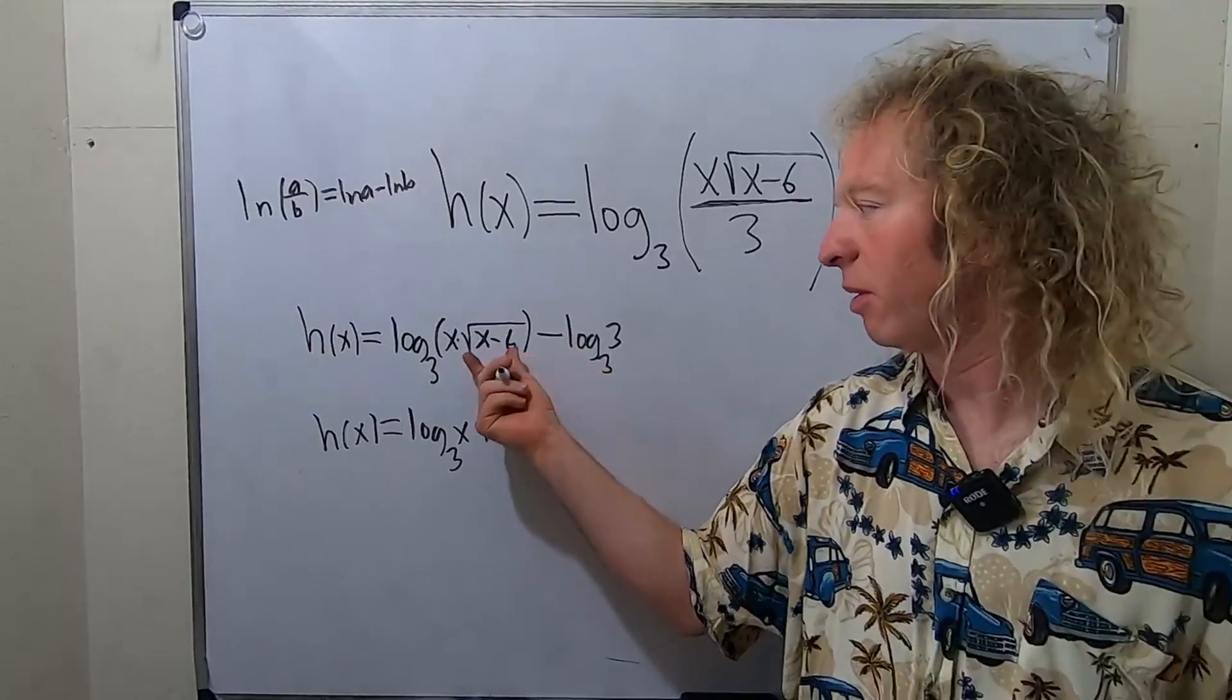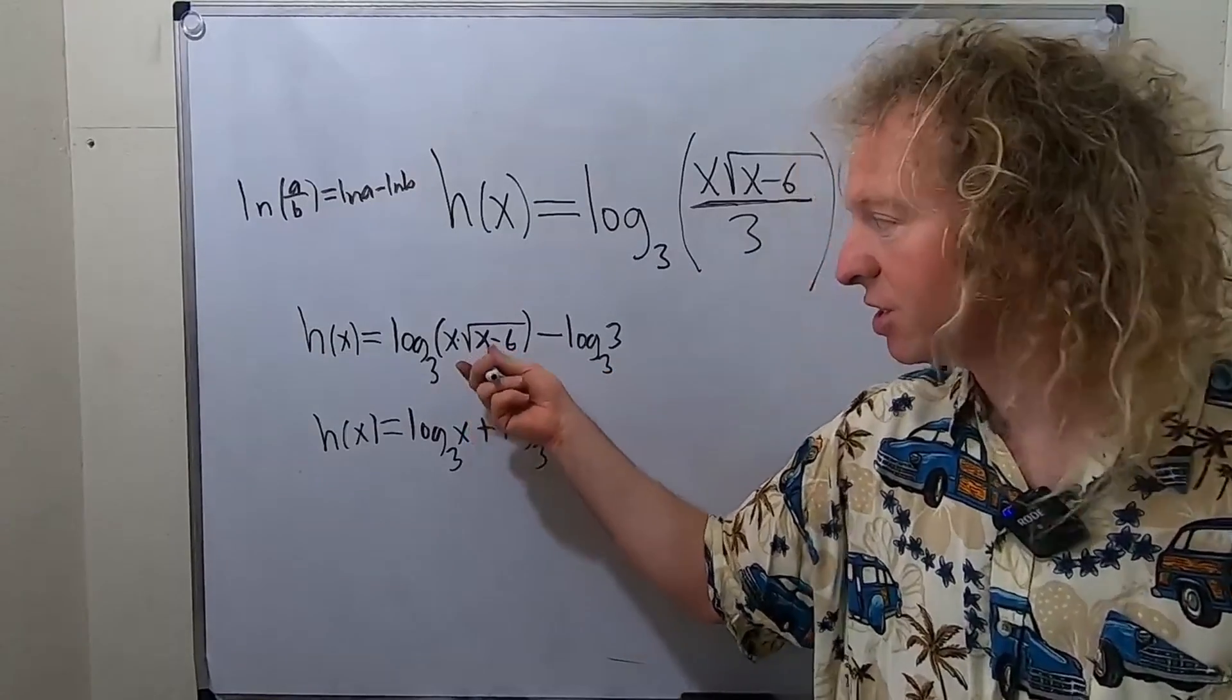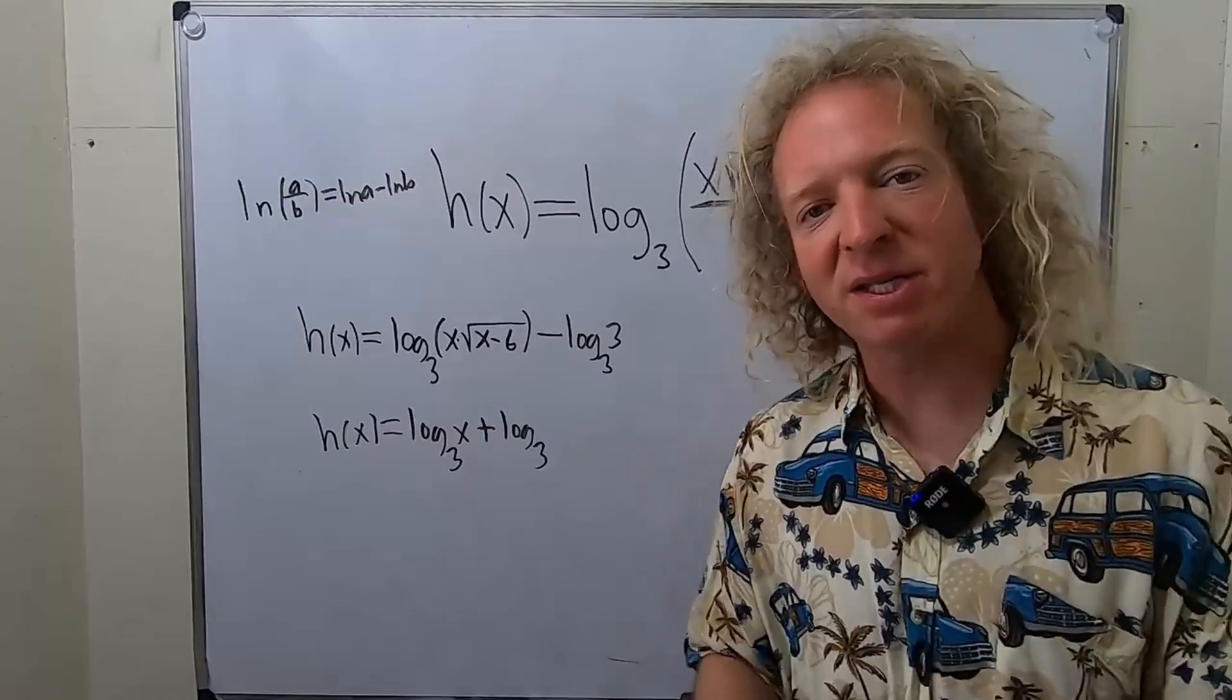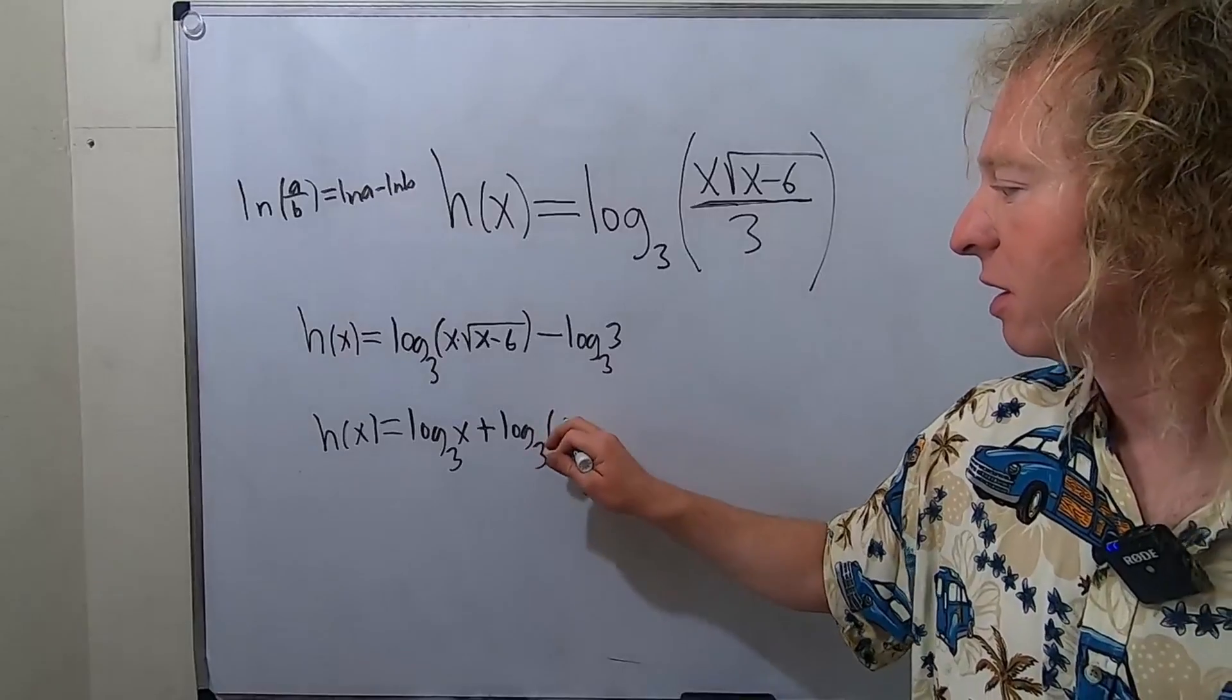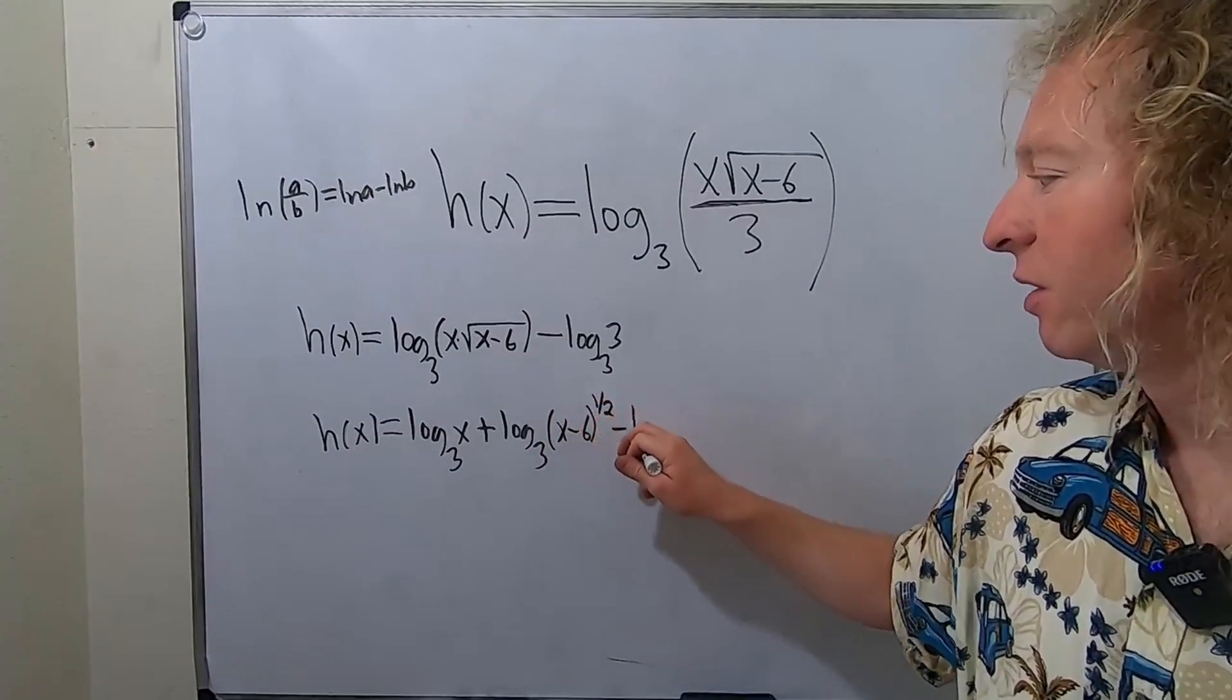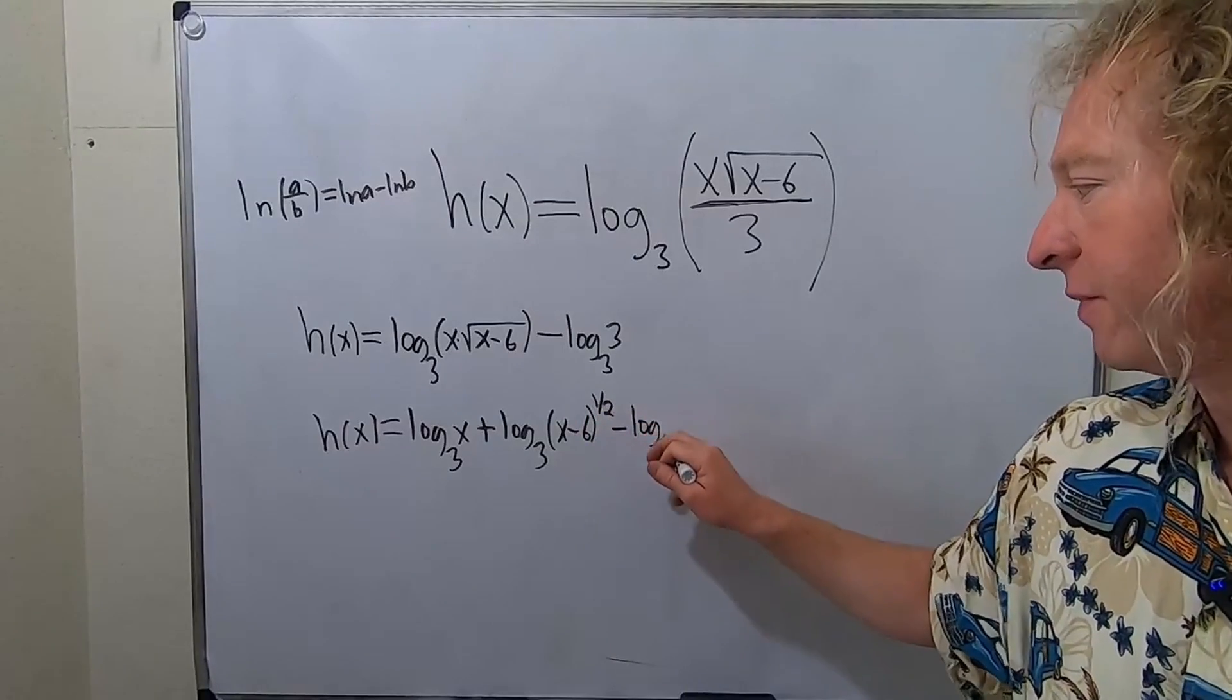In the next step we're going to do some more simplification. I'm going to write the square root of x minus 6 as x minus 6 to the 1 half power like this, x minus 6 to the 1 half. And then we have minus log base 3 of 3.